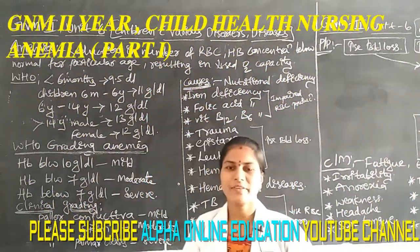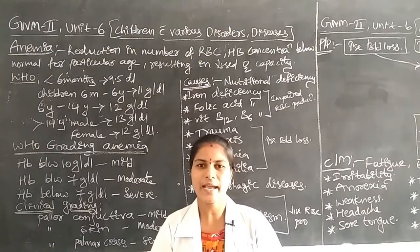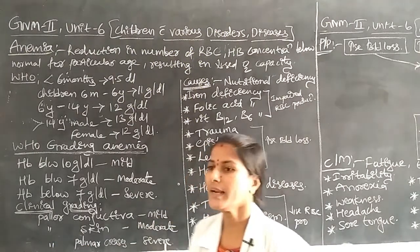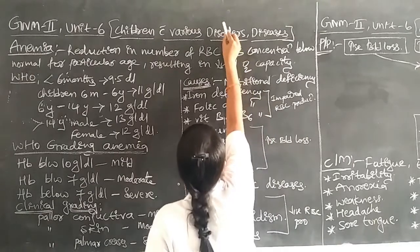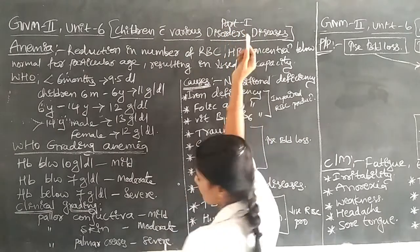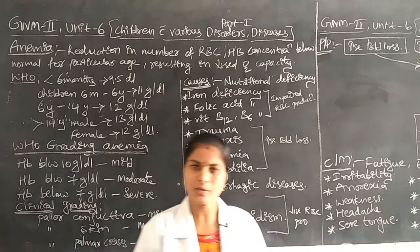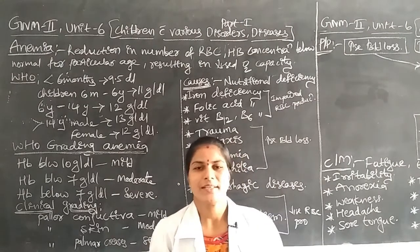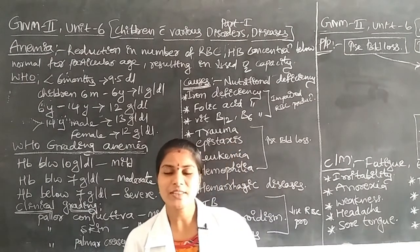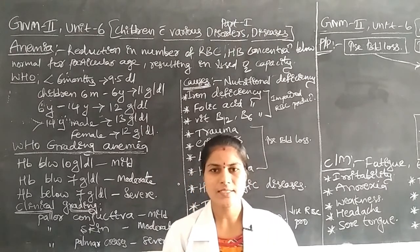Hello viewers. In this video we are going to discuss about one new disease condition, that is anemia. This is Part 1 of anemia. It is a disease condition relevant to children and will be covered in the Child Health Nursing subject, Unit 6, which is the unit on children with various disorders and diseases.